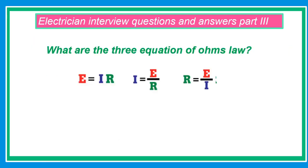What are the three equations of Ohm's law? E equals I times R, I equals E over R, R equals E over I.